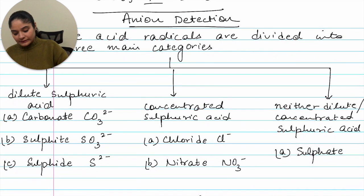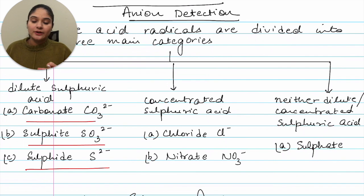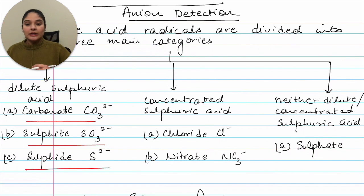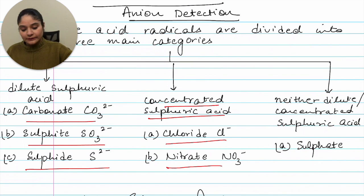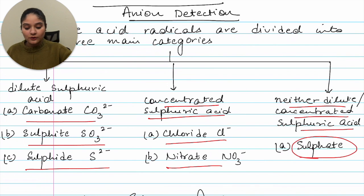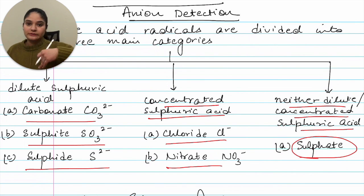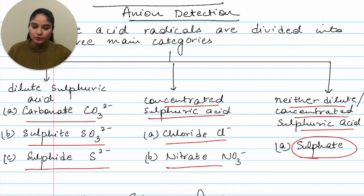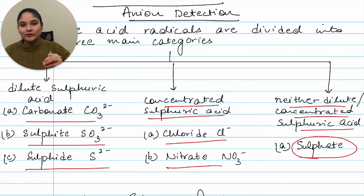For dilute sulfuric acid, the options we have are carbonate, sulfite, and sulfide. These three can be detected when you react your acid radical with dilute H₂SO₄. For concentrated sulfuric acid, you have two options: chloride and nitrate. For the last one — neither dilute nor concentrated sulfuric acid — you have sulfate. I have also included hydrogen detection, which you can check towards the end of the video. In every portion we'll understand the unique characteristic of the gas or product formed.